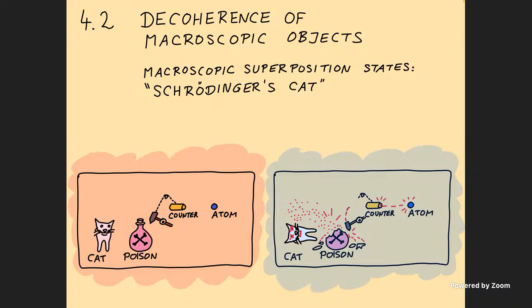What's so weird about this is that something that is at first microscopic — namely what goes on in the atom, which level it is in — can easily be in a superposition. No one would complain that microscopic things are in a superposition. But this microscopic superposition is then by this process transferred to a macroscopic superposition, and that is so strange. Schrödinger took that as an indication that we don't yet know everything about quantum mechanics. Nowadays, we rather think this has to be taken seriously.